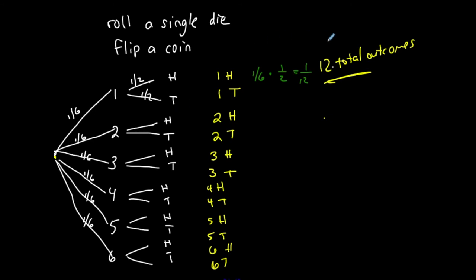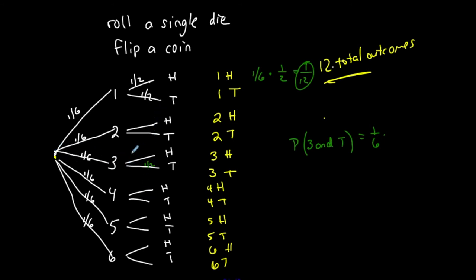Since I have the total sample space, I know there's one chance out of twelve total, which confirms the result. To find the probability of rolling a three and then getting tails, I follow that branch: one-sixth chance of rolling three, times one-half chance of getting tails, equals one-twelfth. This is how the tree diagram works — you follow the relevant branch and multiply the probabilities.